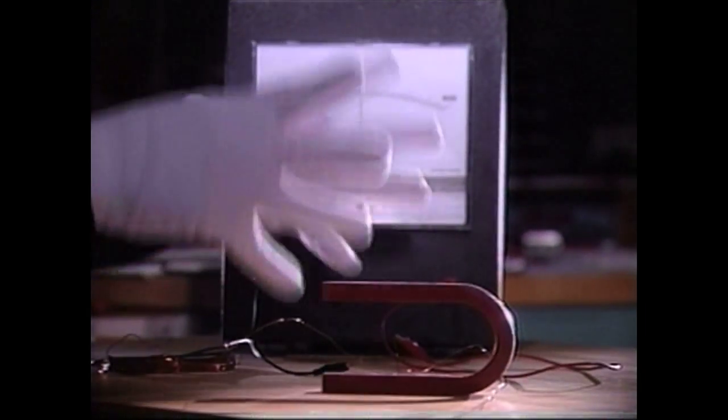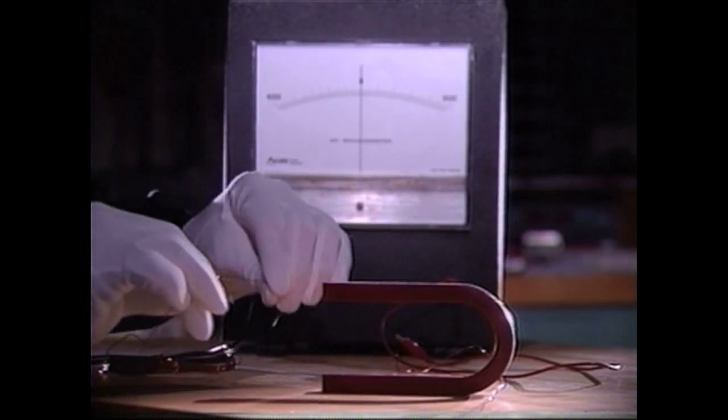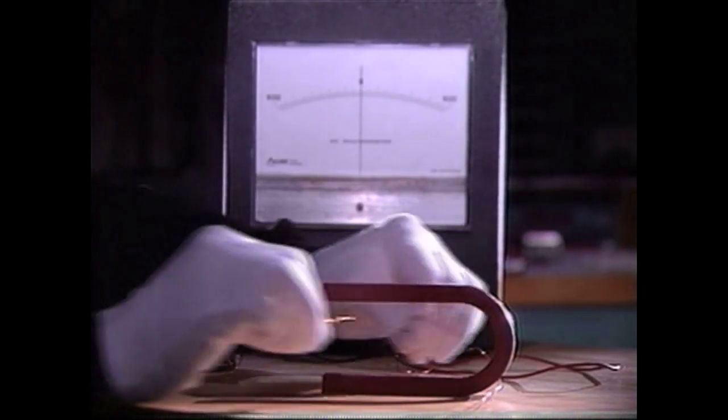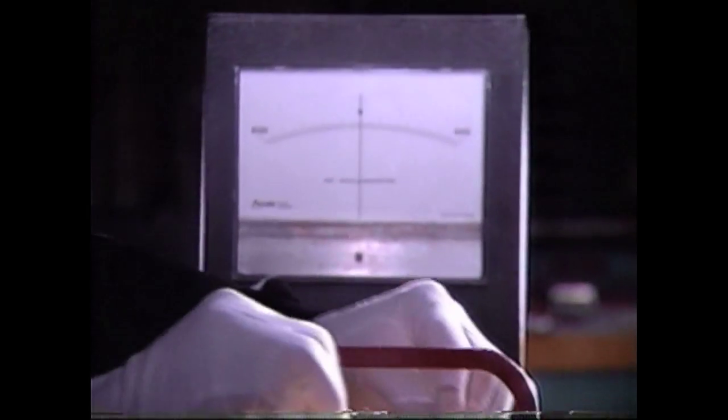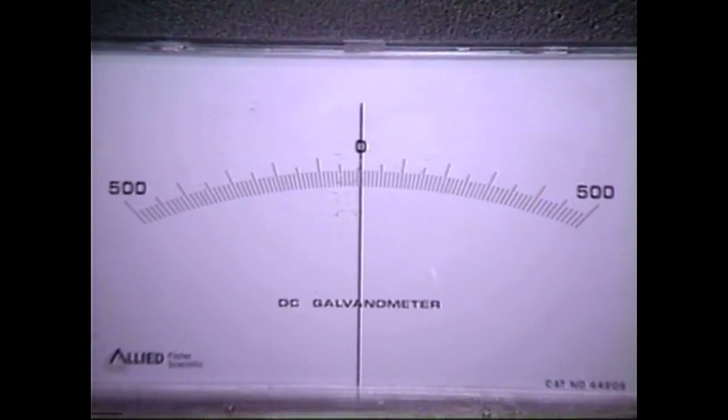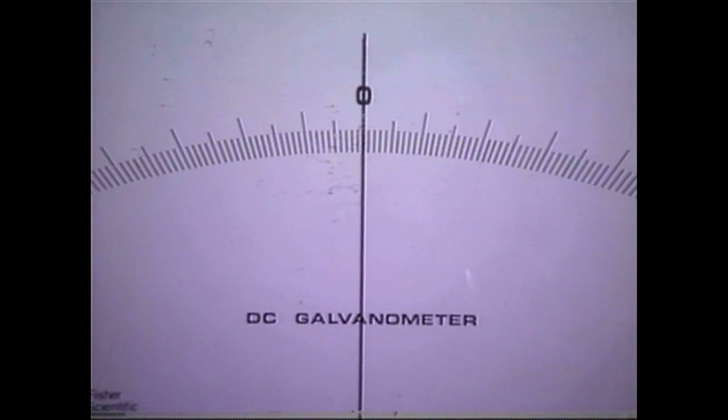An electric current can be generated quite easily. Simply move a wire conductor through a magnetic field. See what happens? As the wire passes through the field, the meter indicates a small current is being produced.